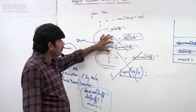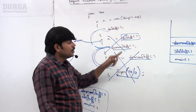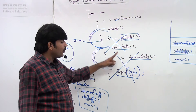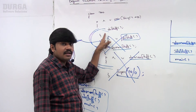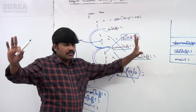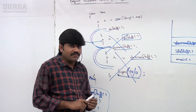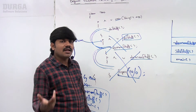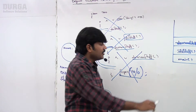JVM then asks: who is the caller of doStuff? The caller is main. JVM asks main method: you called doStuff, doStuff called doMoreStuff, an exception was raised, and neither doMoreStuff nor doStuff handled it — you are responsible. Where is your handling code? Main method replies: I'm not having any handling code. JVM says: then I will terminate you also. Main method is terminated abnormally and its entry is removed from the stack.